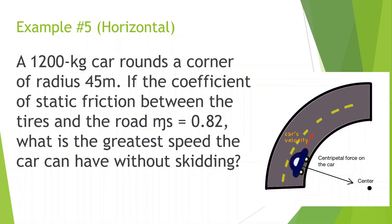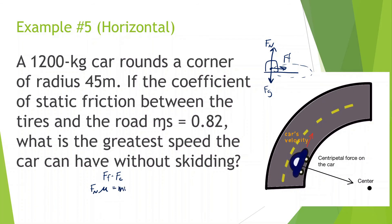A 1,200 kilogram car rounds a corner of radius 45 meters. If the coefficient of static friction between the tires and the road is 0.82, what is the greatest speed the car can have without skidding? Drawing a free-body diagram from a bird's eye view: we have force of gravity, normal force, and the force of friction — which is what allows this car to move in a circle. So force of friction equals force centripetal, and force of friction equals normal force times mu, while centripetal force equals mv²/r.